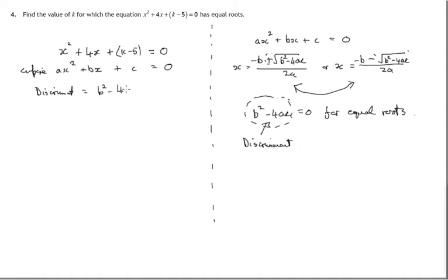Which is b² - 4ac. So we've got b, which is the coefficient of x. B is 4, so we've got 4² minus 4 times a. Let's have a look at a. There's 1x² so a will be 1, times c. Let's look at c. C is k - 5.